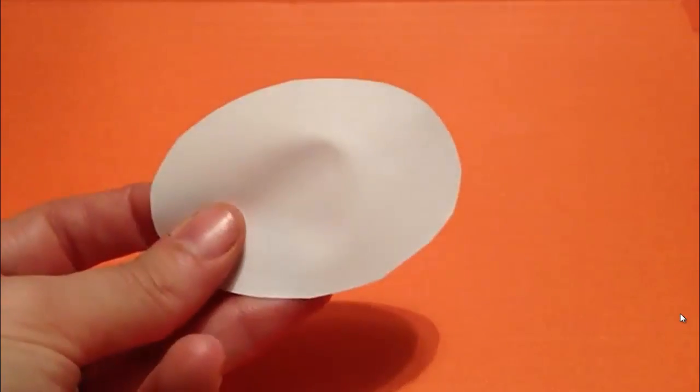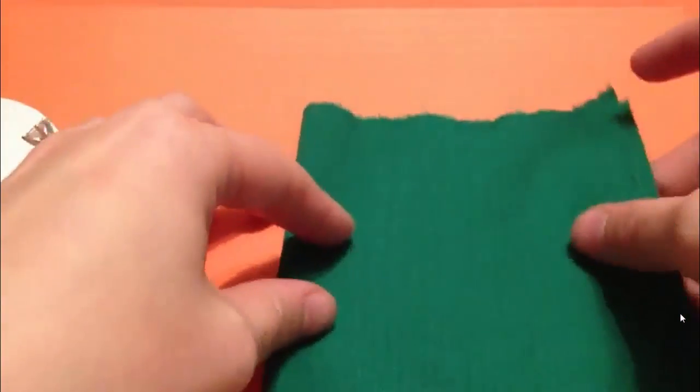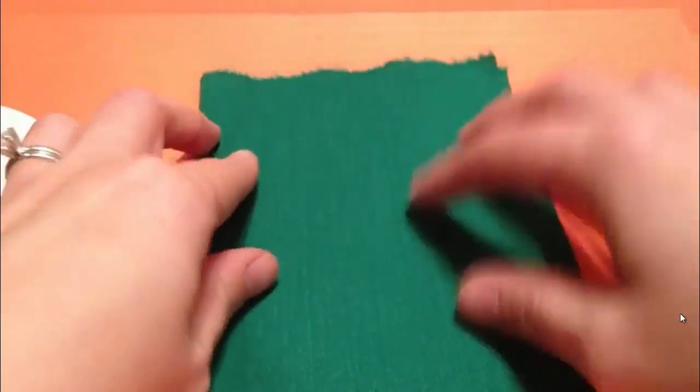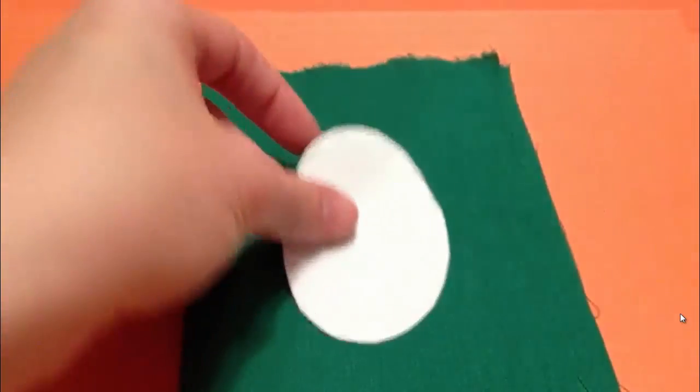And as magical as that would be, here you go. So take your green rectangle of fabric. What we're going to do is fold that in half and take our white oval and put it on top.